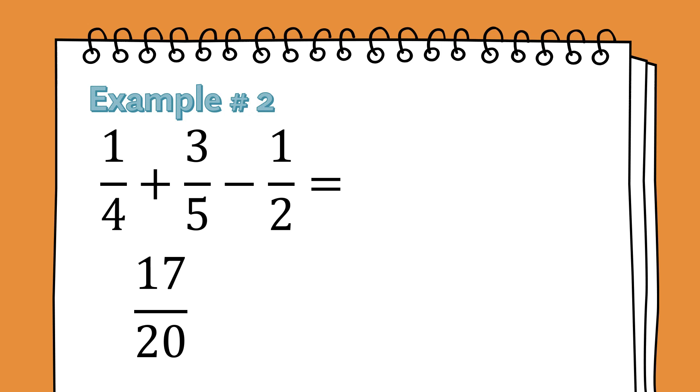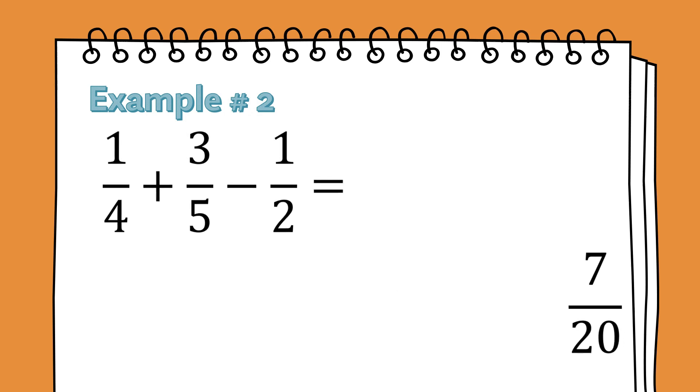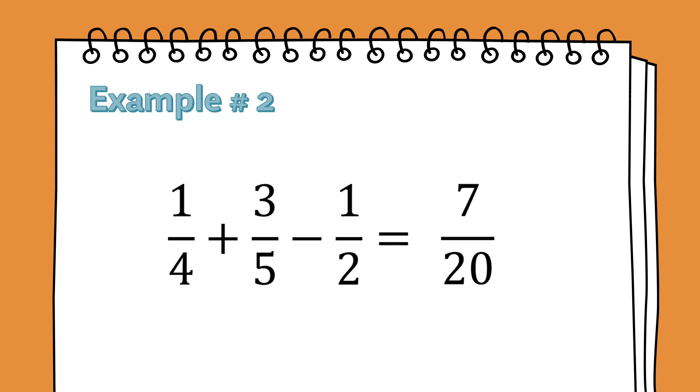Follow the steps in subtracting the similar fractions and this will give us an answer of 7 over 20. Make sure that all answers should always be in its simplest form. Therefore, one fourth plus three fifth minus one half equals 7 over 20.